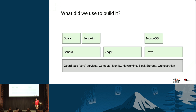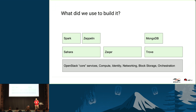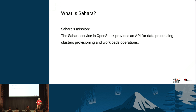So what do we use to build it? Of course we use the core services. Then we use Sahara, Zakhar, and Trove. And on top of those, we use Spark, Zeppelin, and the Mongo database. We're going to get into how we used these components and what they are. At this point I'm going to hand it over to Nikita, and he's going to talk a little bit about Sahara and Spark.